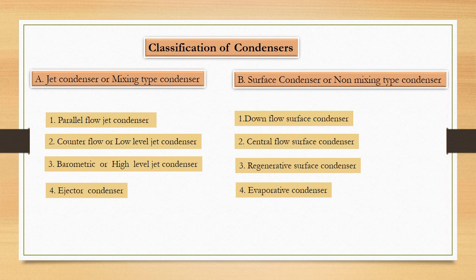Now we will see classification of condenser. We have jet condenser that is called mixing type condenser and second is surface condenser which is called non mixing type condenser. We have four types of mixing type condenser.